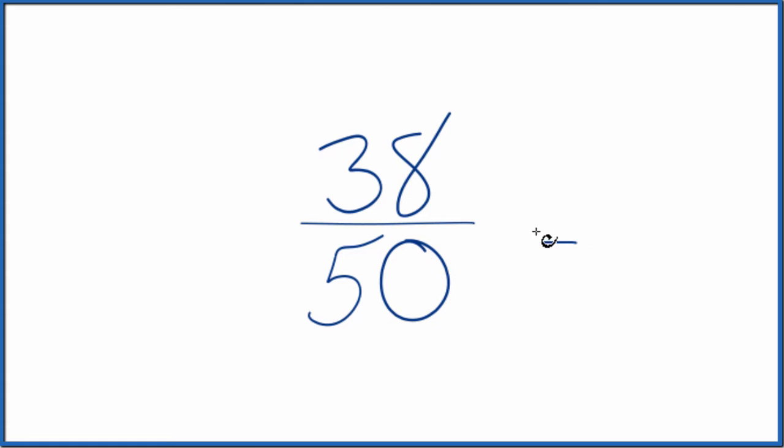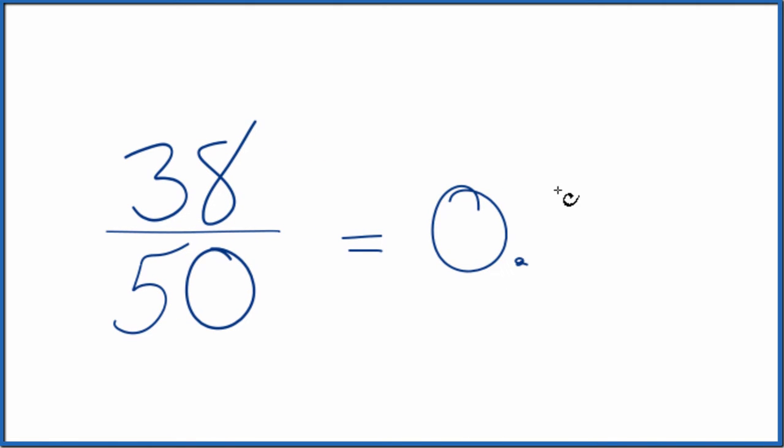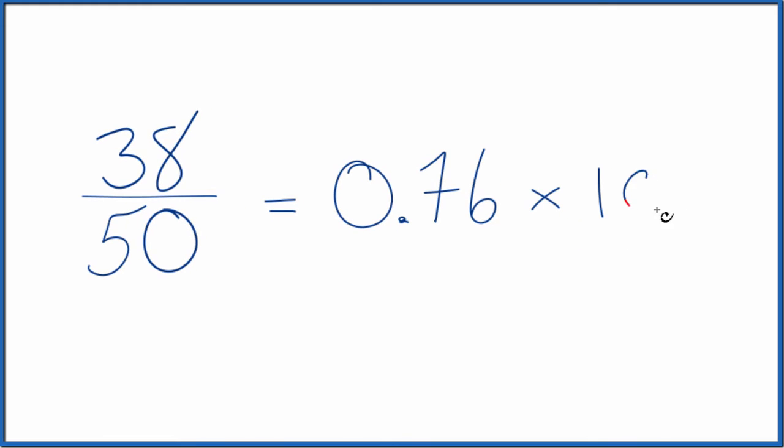So the first is you could just get your calculator out, divide 38 by 50. That'll give you 0.76. That's your decimal. Then you just multiply the decimal by 100. We get 76%, so you got a C.